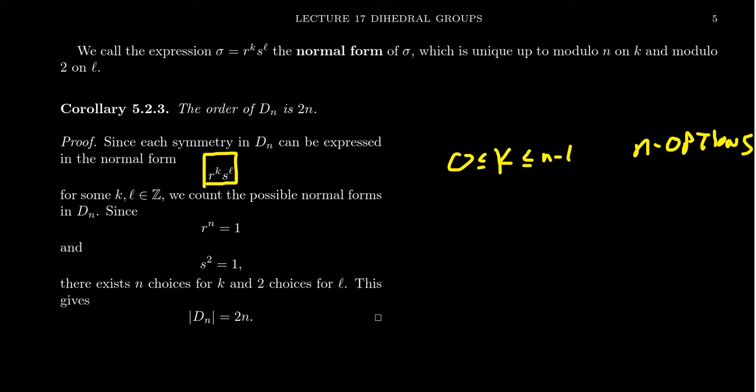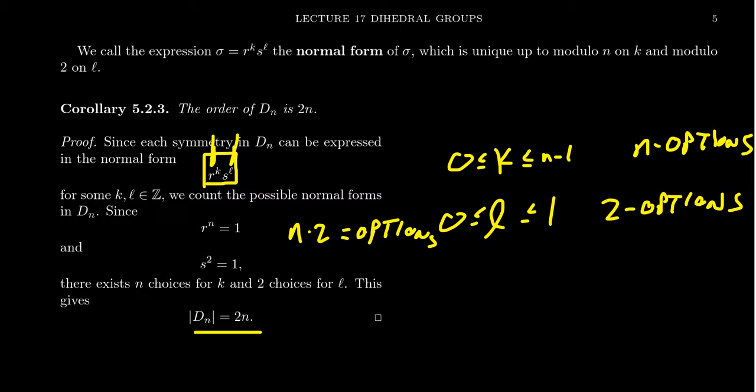This comes from the normal forms. Every element in dn can be written in the form r to the k times s to the l, where k and l can be uniquely chosen so that k must be between 0 and n minus 1, so there's n options for k because the order of r is n. And l has to be chosen between 0 and 1, so you get two options because the order of s is 2. So if you have n options for k and two options for l, you get n times 2 many options total, following from the fundamental multiplicative principle of counting.